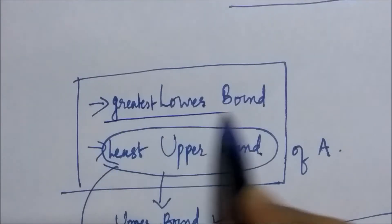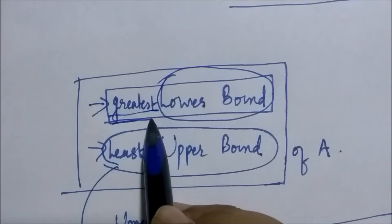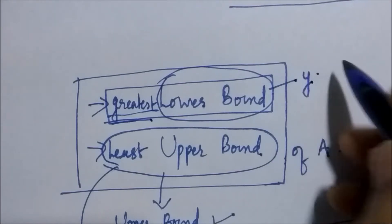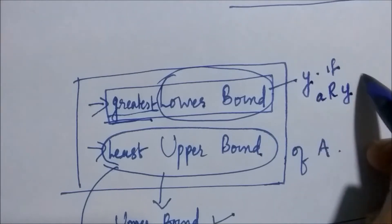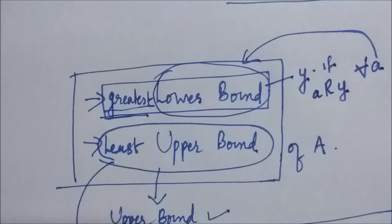The greatest lower bound (GLB) of a set A is an element y such that a is related to y for all a belonging to the lower bound set of A. So you take the lower bound set and the element y must be related to by all elements in that set. Both the greatest lower bound and least upper bound are unique if they exist.